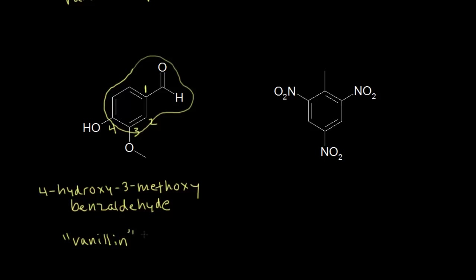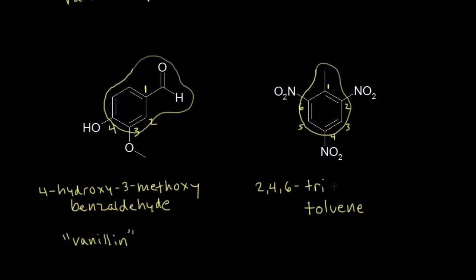Let's do one more extremely famous example. The monosubstituted parent name here is toluene, making the methyl group carbon 1. Numbering to give the lowest values, we find three nitro substituents at positions 2, 4, and 6. The prefix for three is tri, so the IUPAC name is 2,4,6-trinitrotoluene. Most people in the general public know this molecule as TNT — the famous explosive. This shows how the nomenclature for polysubstituted benzene derivatives gives rise to the name TNT, and hopefully this video provides a solid introduction to naming molecules that contain benzene.